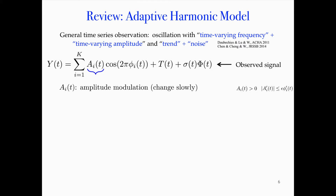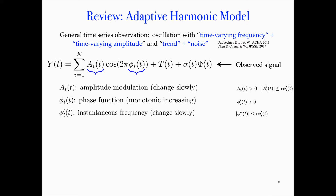We assume instantaneous frequency changes slowly. If a_i is constant and φ is linear, then you get the traditional ordinary harmonic function. So this model captures the fact that the signal locally will oscillate like a harmonic function. We call this component the intrinsic mode type function. The trend T changes locally and slowly — you can view it as a locally DC trend. The noise φ can be ARMA, GARCH, etc., and σ captures non-stationarity.